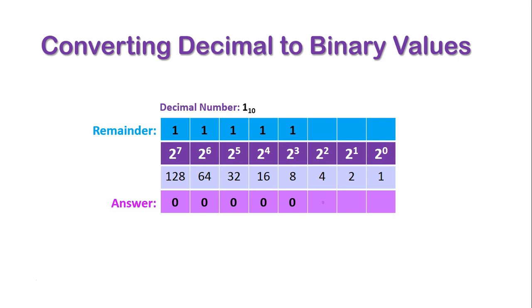4 can't go into 1, 0, remainder 1. 2 can't go into 1, 0, remainder 1. But 1 can go into 1, so we put a 1 there, and now there is no remainder, so the remainder is 0. So basically, that gives us the answer of 1, and we put a little 2 next to it to show us that it's binary.